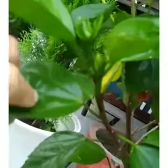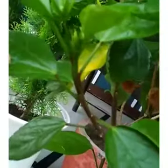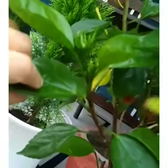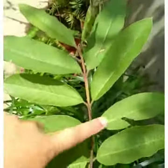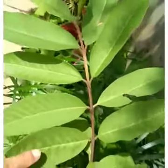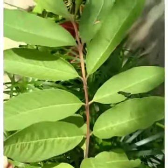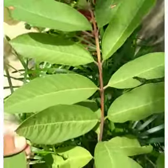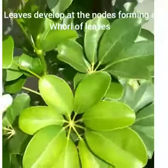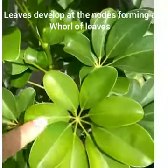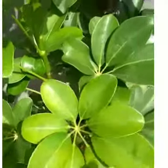This is a hibiscus plant, and here you can see that the leaves are arranged in an alternate manner. This is a guava plant, and here you can see that the leaves are arranged opposite to each other. It's a decorative plant, and here you can see that the leaves are arranged at the next node.